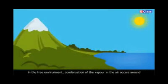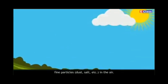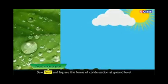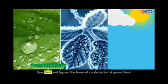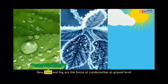In the free environment, condensation of vapor in the air occurs around fine particles, dust, and salt in the air. Dew, frost, and fog are forms of condensation at ground level. We can see dew drops during the morning.